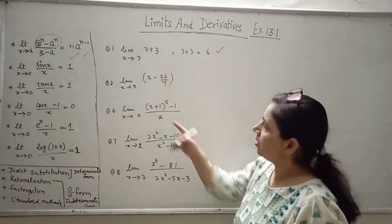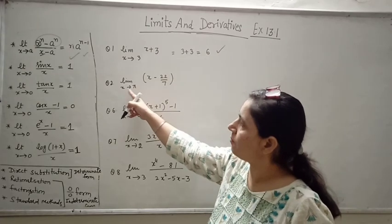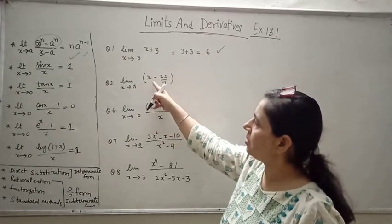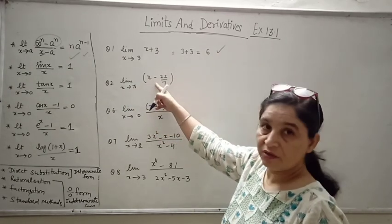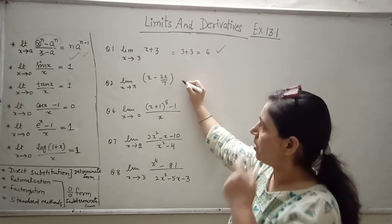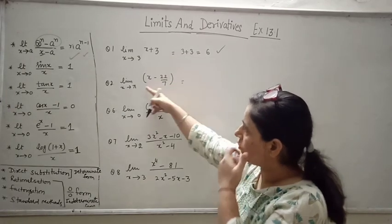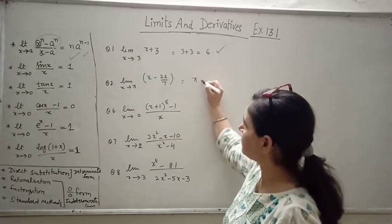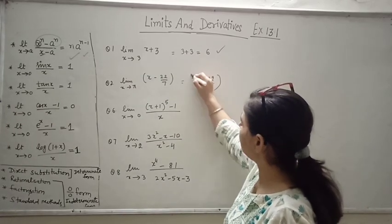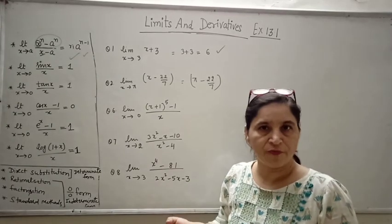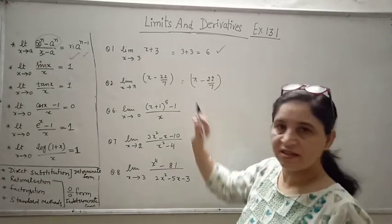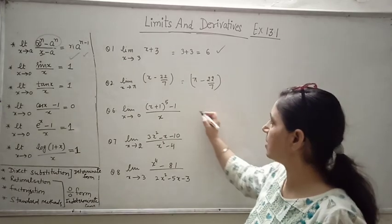Question number 2: limit x tending to pi of the function x minus 22/7. We will put the value of x which is pi. Since pi is approximately 22/7, we let it remain as it is because the exact value of pi is not given. So let it be as it is.